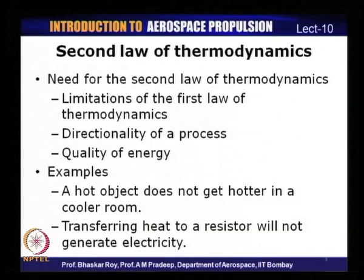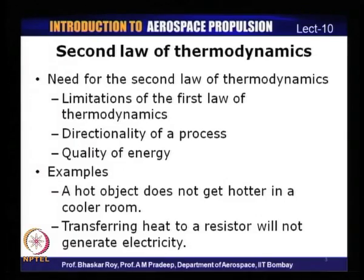It was realized very soon that there are some limitations of the first law, and as a result, there was a need to define a second law which would define that there is a certain direction in which a process can take place and processes cannot take place in the reverse direction. For example, if you look at a cup of coffee at 50 degrees Celsius kept in a cold room, the cup of coffee cools down. But a cold cup of coffee will not rise to a temperature higher than the ambient temperature on its own.